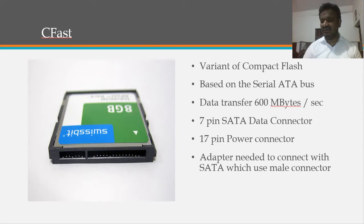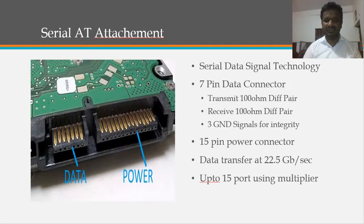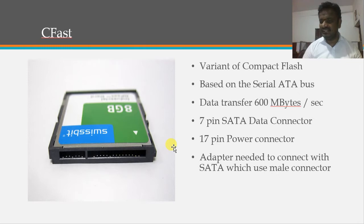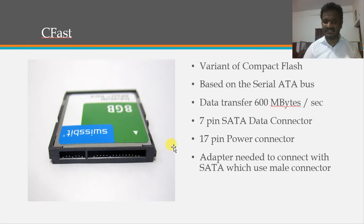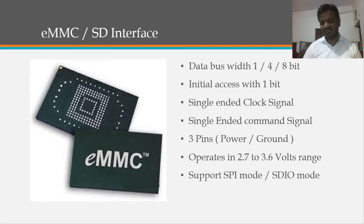CFast is a variant of Compact Flash but is based on the Serial ATA bus, enabling transfers up to 600 megabytes per second. It has a 7-pin SATA data connector and a 17-pin power connector, both female. Standard SATA connectors are male, so an adapter is needed to connect a SATA interface to a CFast device. Despite this, CFast delivers much higher performance — up to 600 megabytes per second.